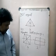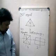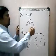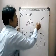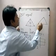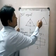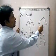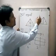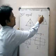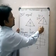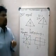Next is isosceles triangle. In an isosceles triangle, two sides are the same. Only one line of symmetry is possible in an isosceles triangle.